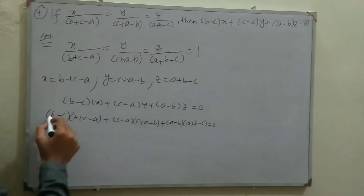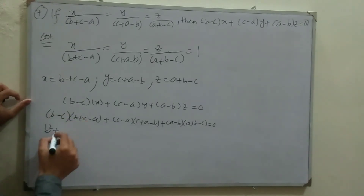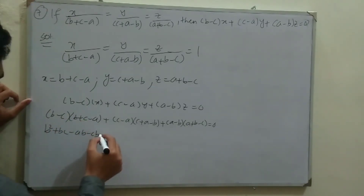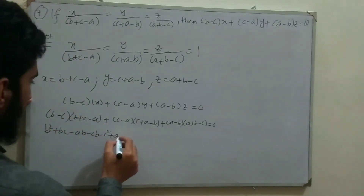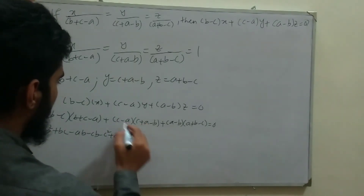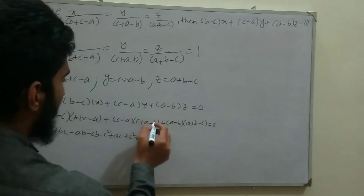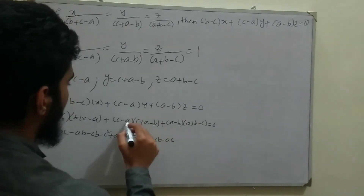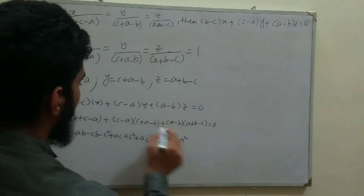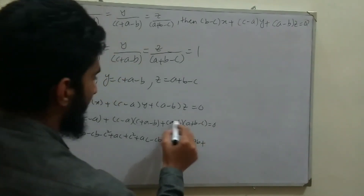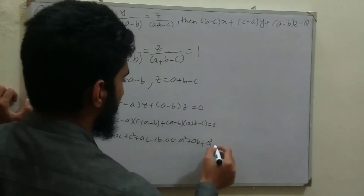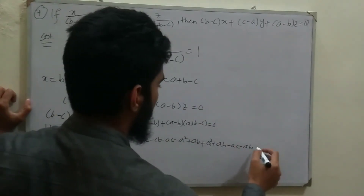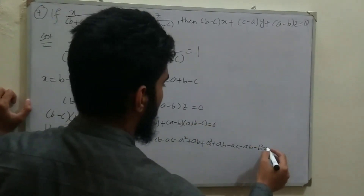Expanding each product: (b−c)(b+c−a) = b²+bc−ab−bc−c²+ac = b²−c²−ab+ac. Then (c−a)(c+a−b) = c²+ac−cb−ac−a²+ab = c²−a²−cb+ab. Then (a−b)(a+b−c) = a²+ab−ac−ab−b²+bc = a²−b²−ac+bc.